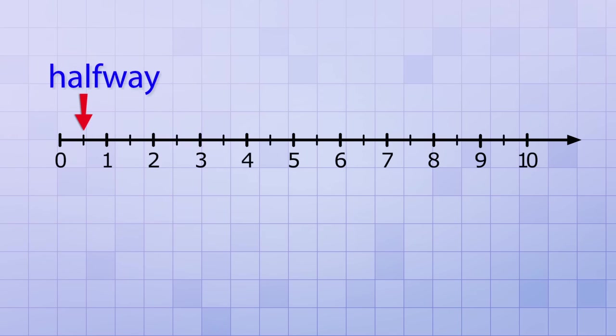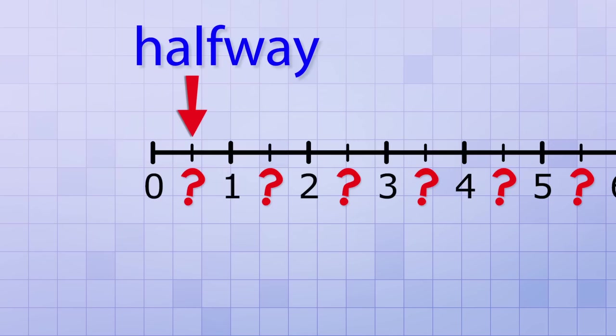For example, what if we put an extra mark exactly halfway between each of the marks that we already have? What would these new marks represent? Well, the first one is pretty easy. It's halfway between 0 and 1, so it represents the number 1 half, which happens to be the same amount as the decimal 0.5.